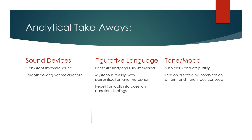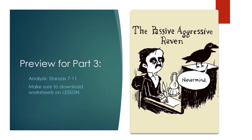Just a few analytical takeaways before wrapping up today's video. We have sound devices and figurative language working together to create not just a sorrowful, melancholic tone and mood, but also one that feels strangely off-putting. Although the consistent rhyme scheme creates a free-flowing feel, the types of sounds repeated and the trochaic meter create a feeling of tension within us. For part three, we'll continue with stanzas 7 through 11. Please download worksheet number 14 for that next video, which I'll post along with the video link. Thanks for watching, and see you tomorrow.